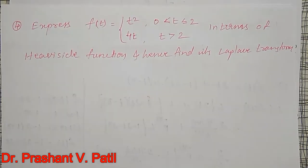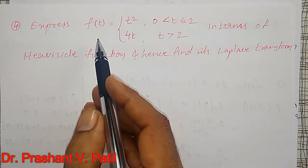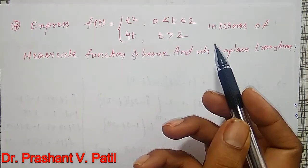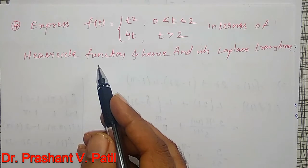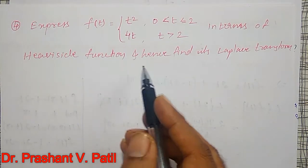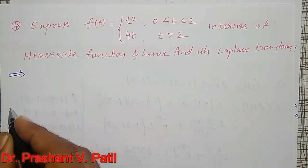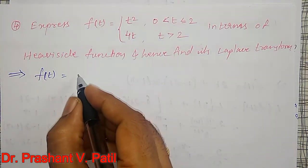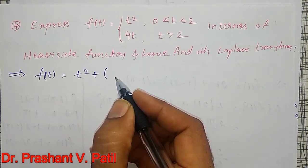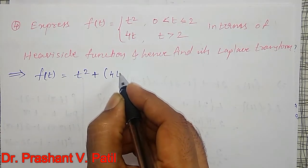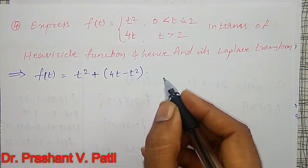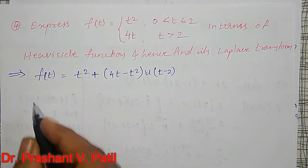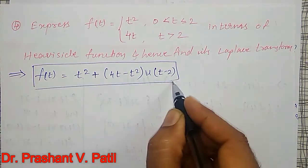Using this, let's discuss an example: express f(t) = t² for 0 < t ≤ 2 and 4t for t > 2, in terms of a Heaviside function (Heaviside function and unit step function are one and the same), and hence find its Laplace transform. So f(t) = t² + [4t − t²] · u(t − 2). This is the required unit step function.